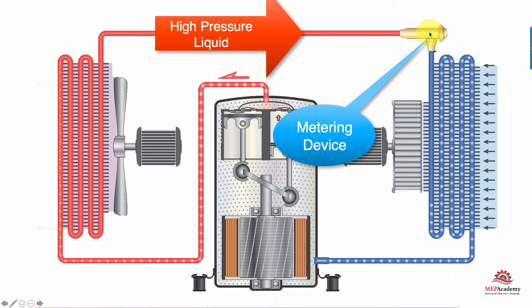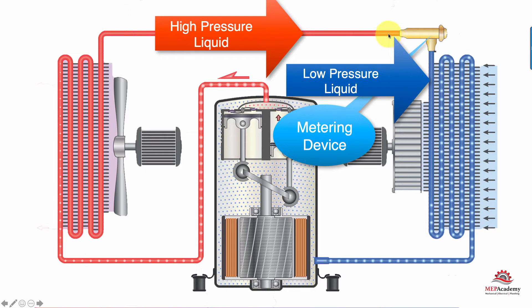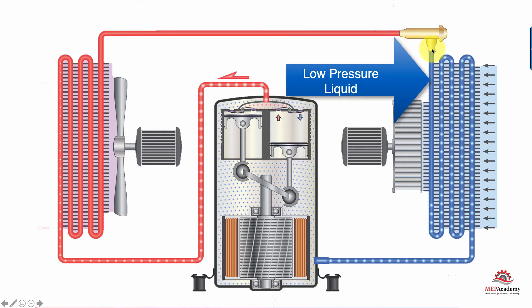The metering device controls the high pressure and the low pressure liquid. You have high pressure liquid coming in and low pressure liquid coming out. Now, this liquid is going to boil.